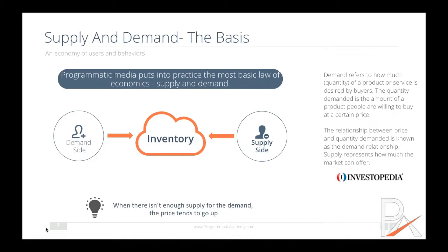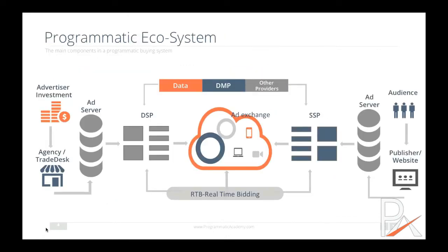On one side you have the demand side, which are the buyers — these are the DSPs, the people buying inventory and impressions. In the middle you have the inventory, and we meet with the supply side, which supplies the inventory — those are the publishers and websites. One thing that drives the price, whether it's CPM in programmatic or the cost of goods in a regular economy, is that when there is not enough supply for the demand, the price tends to go up.